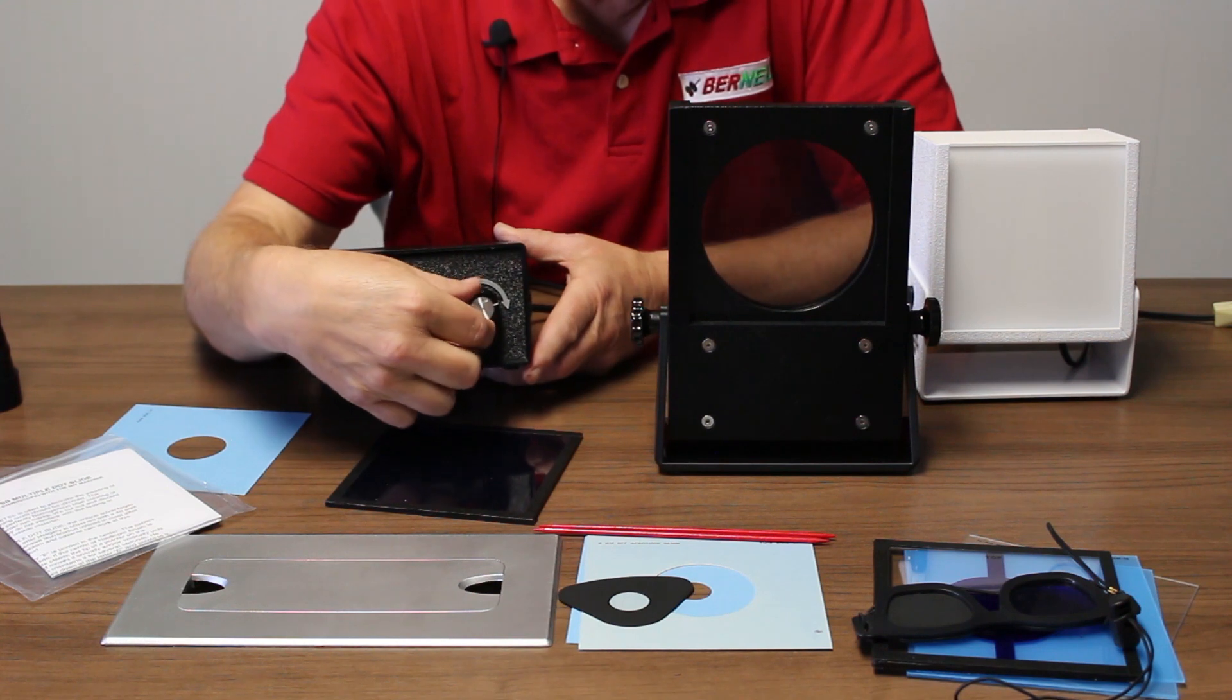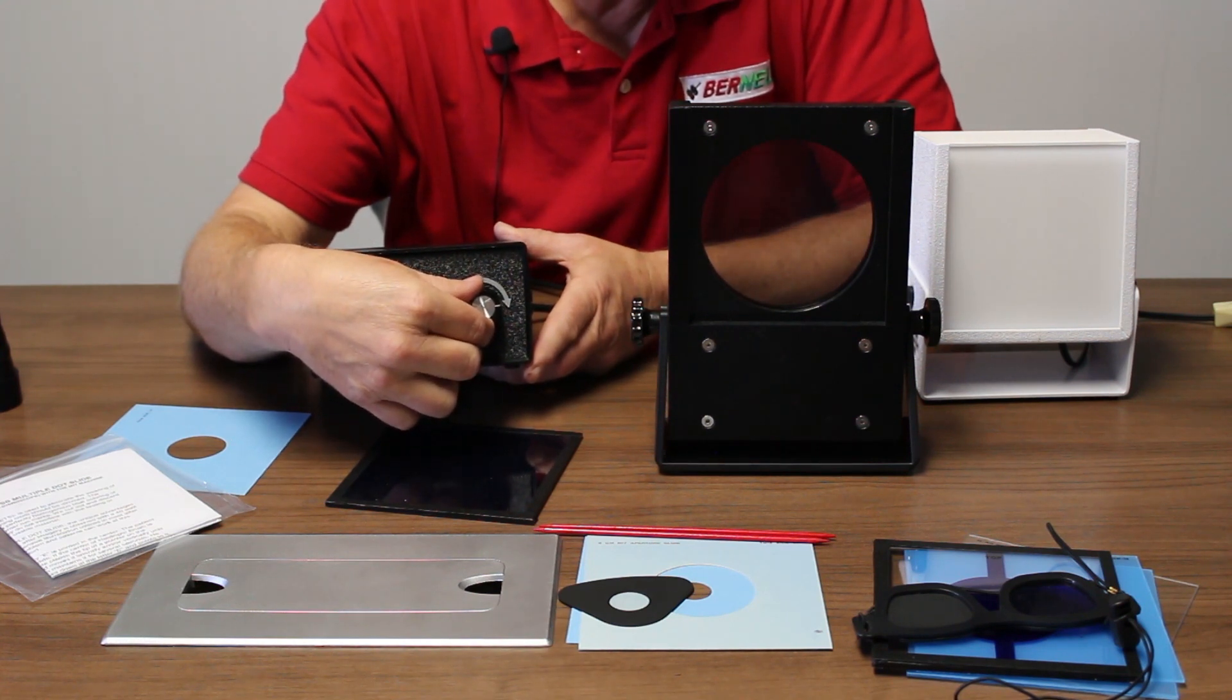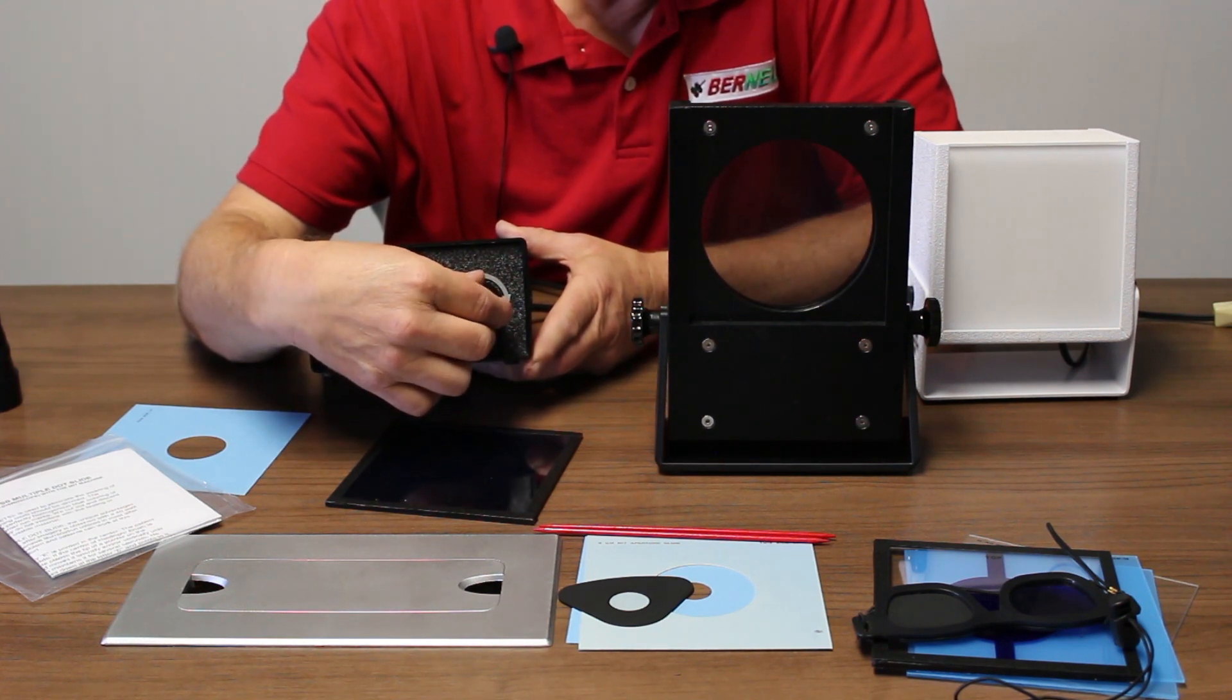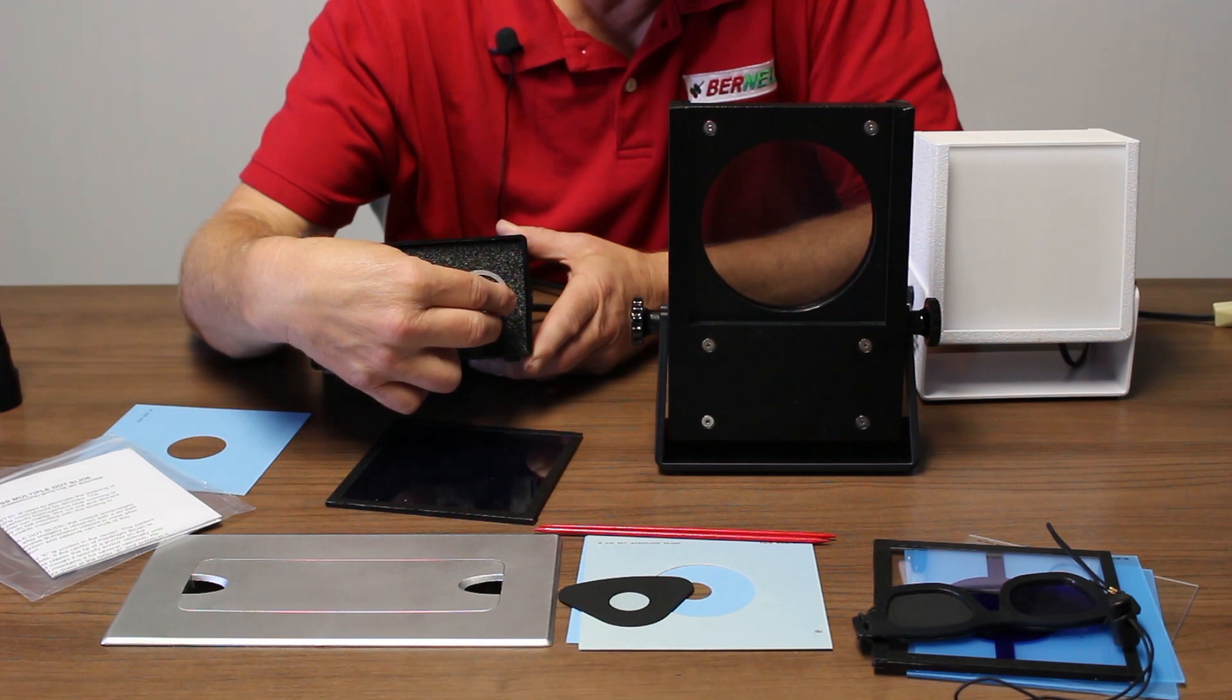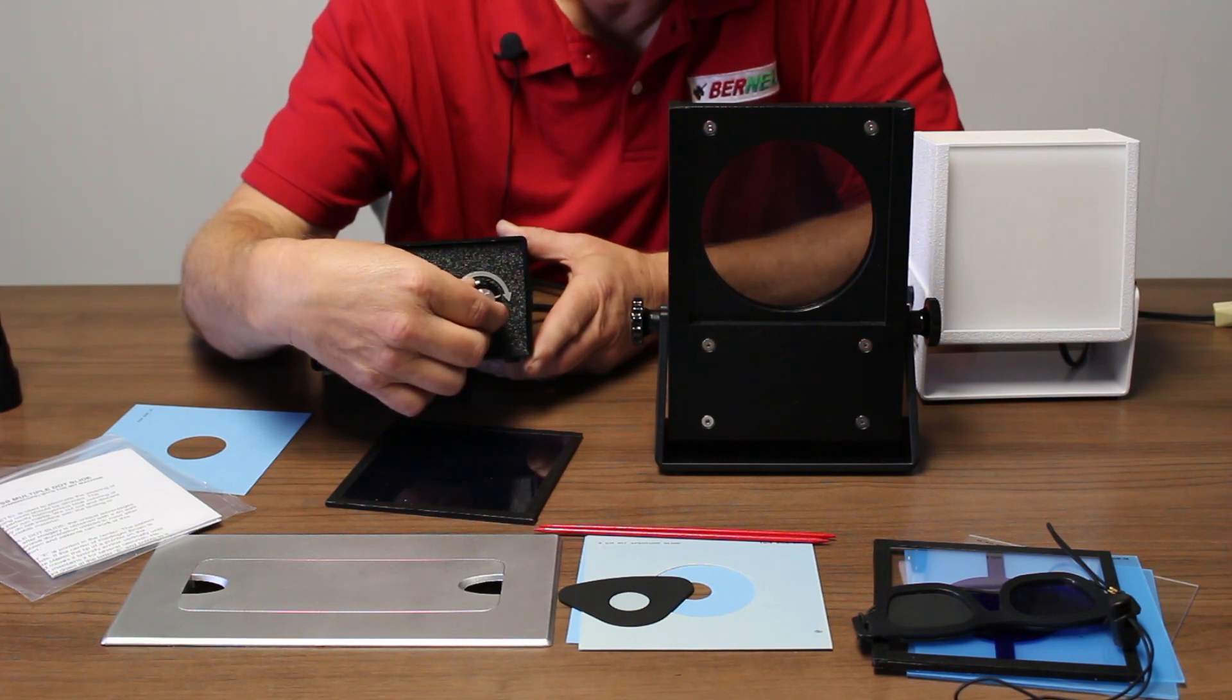You want to have this set at about the 2 to 3 o'clock position at about this speed. If you have it going too fast, the brush and propeller spins so fast it's sometimes difficult to see. Too slow, it doesn't give you the effect you want.